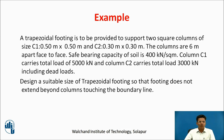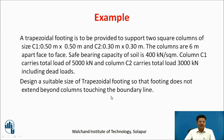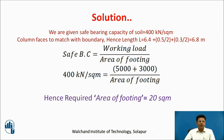A trapezoidal footing is to be provided to support two square columns: column C1 is 0.5 m × 0.5 m and column C2 is 0.3 m × 0.3 m. The columns are 6 meters apart face to face. The safe bearing capacity is 400 kN/m². Column C1 carries a total load of 5000 kN and column C2 carries a total load of 3000 kN. These two loads include the dead loads. We need to design a suitable size of trapezoidal footing so that the footing does not extend beyond the columns touching the boundary line. Column faces are to match with the boundary.